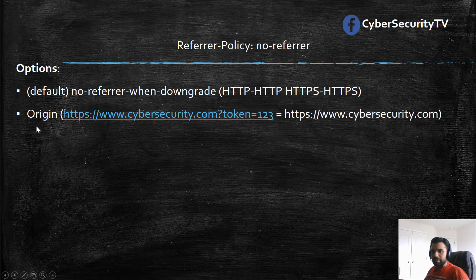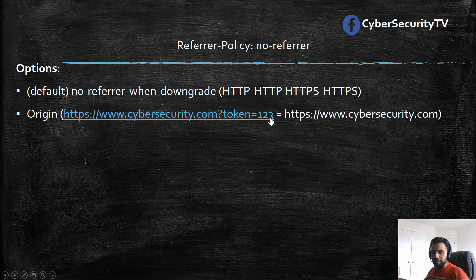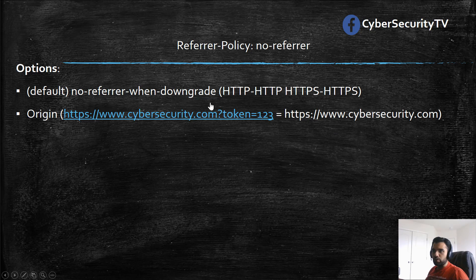The other option is origin. You can specify to only send the origin. So for example, if the URL is cybersecuretv.com/page?token=123, sometimes the query string like a token might contain some sensitive information and we do not want to disclose that. So if we specify the origin policy, it's only going to share the origin — cybersecuretv.com — and no query string.